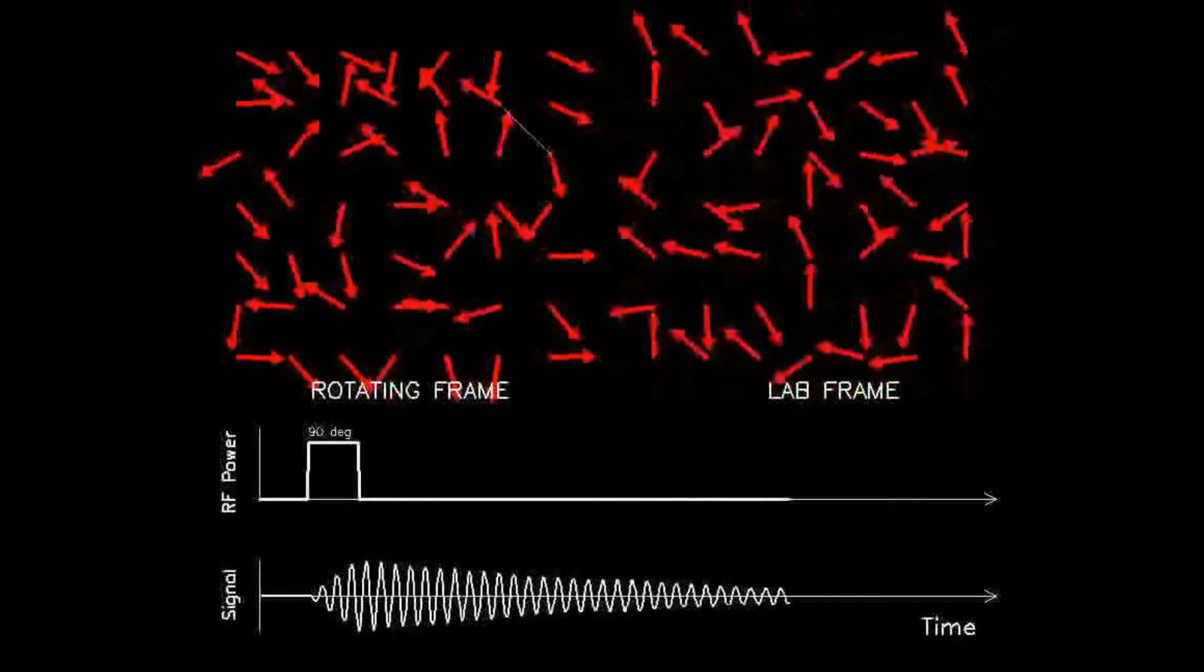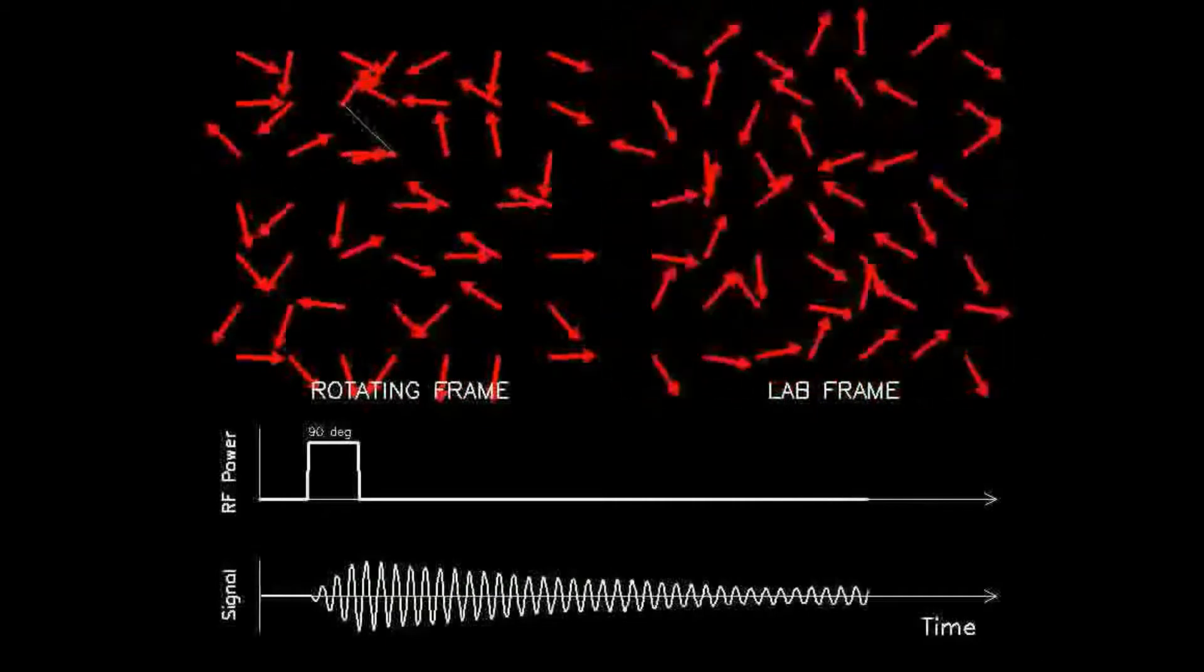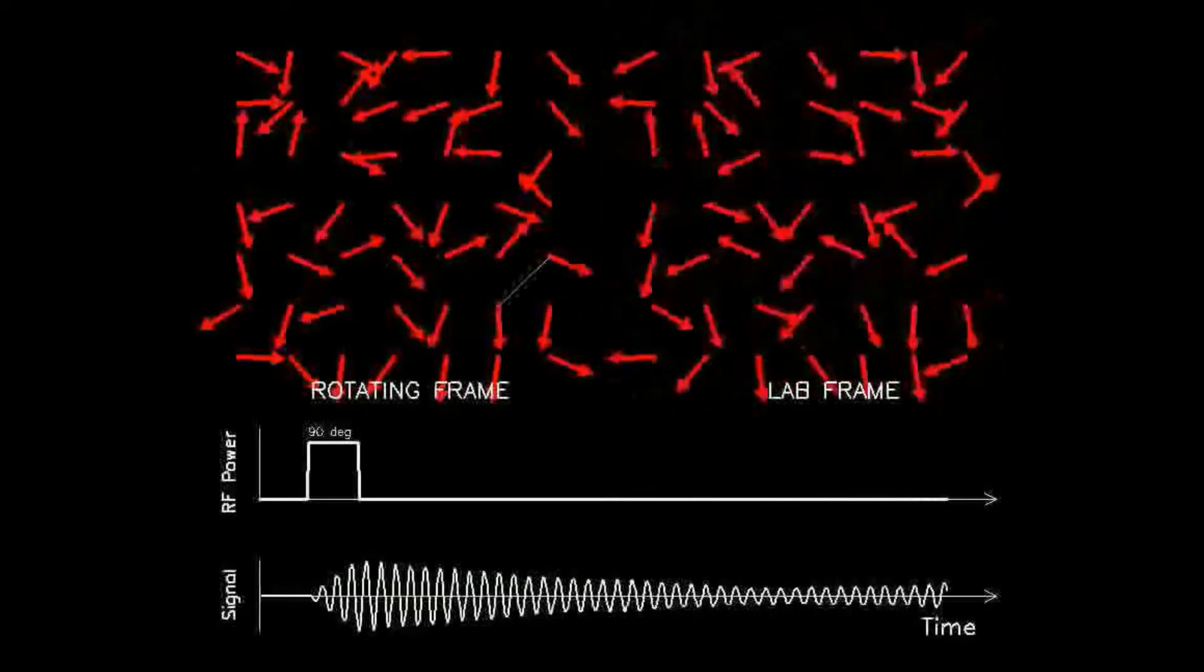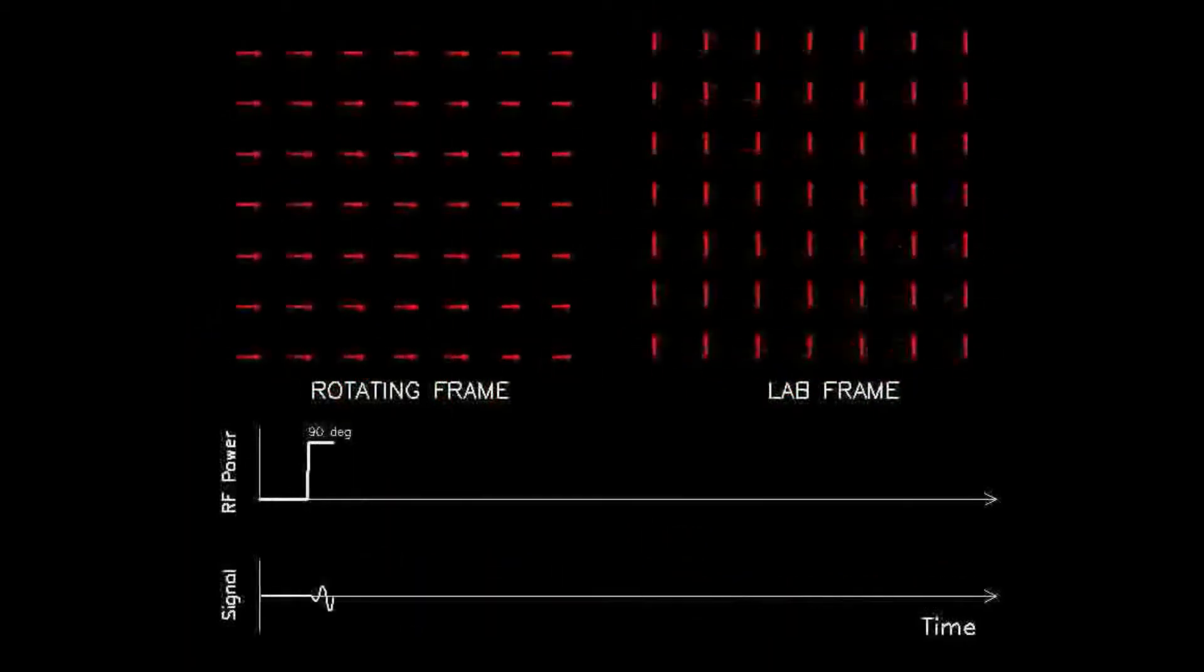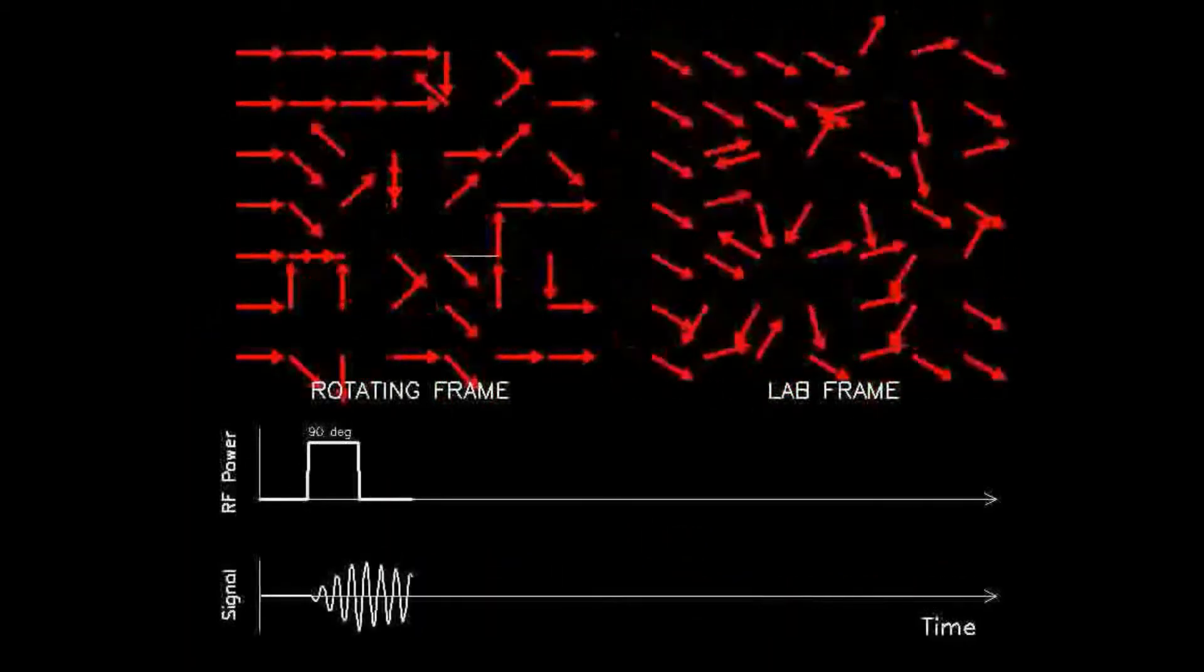The net effect is that over time, the phases become scrambled or dephased. Note that all dipoles remain in the transverse plane. That is, the length of the red arrows is constant, but after time they all point in different directions.